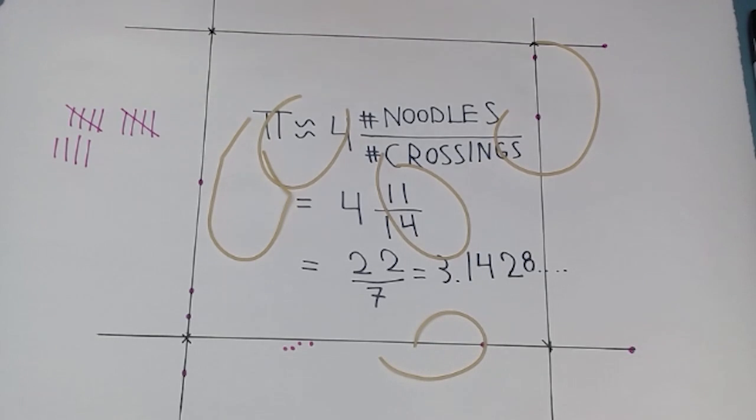In math, what we've done is called generalizing the problem. You might think that this generalizing makes the problem harder. After all, the original straight spaghetti Buffon needle problem is just a special case of this new curvy Buffon noodle problem. But counter-intuitively, this more general problem is actually easier to solve than the original one.